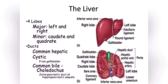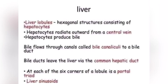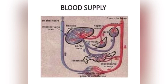Liver lobules are hexagonal structures consisting of hepatocytes. Hepatocytes radiate outward from a central vein. Hepatocytes produce bile, which flows through canals to a bile duct. Bile ducts leave the liver via the common hepatic duct. At each of the six corners of a lobule is a portal triad.